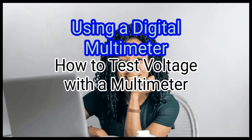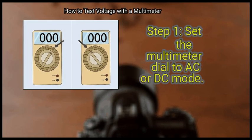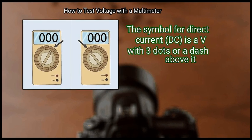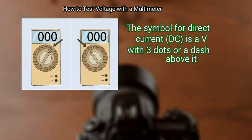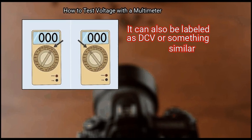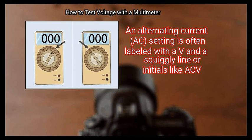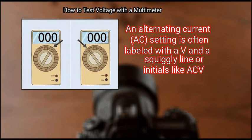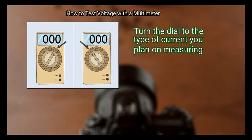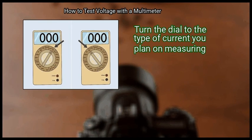First, set the multimeter dial to AC or DC mode. The symbol for direct current, DC, is a V with three dots or a dash above it. It can also be labeled as DCV or something similar. An alternating current, AC, setting is often labeled with a V and a squiggly line or initials like ACV. Turn the dial to the type of current you plan on measuring.